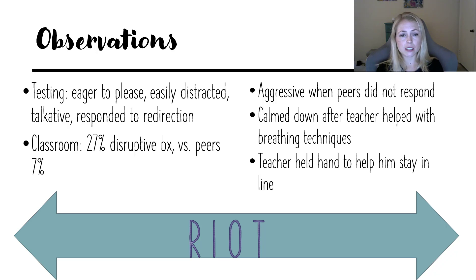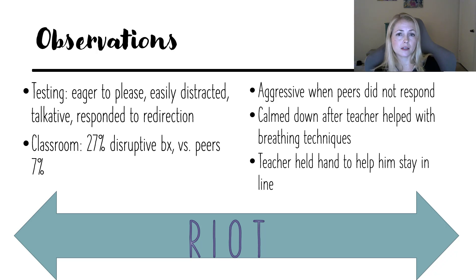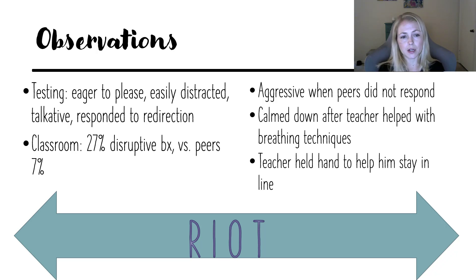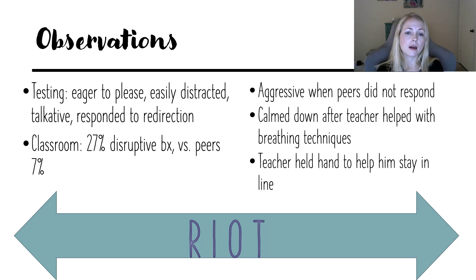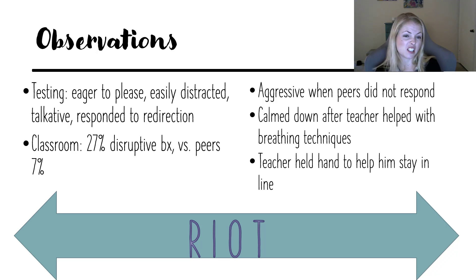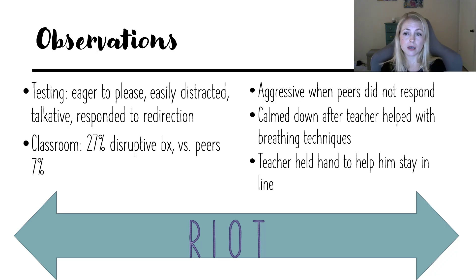We did a structured observation in the classroom, comparing him to same-age peers. Using momentary time sampling — looking up every 30 seconds to see if he's on task or being disruptive — he was being disruptive 27% of the time. We defined disruptive behavior as talking or interacting with peers when not expected to, getting out of his seat, anything off-task and disruptive to the rest of the class. His peers did these things about 7% of the time. So in kindergarten, some kids do that, but 27% versus 7% is pretty high.